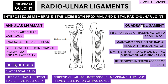Next, the quadrate ligament. Its attachment goes horizontal — from the inferior edge of the radial notch of your ulna to the neck of the radius. It has a few functions: first, it maintains the position of the radial head within the radial notch. It also limits the spin of the radius during supination and pronation — the radial head spins inside the annular ligament over the capitulum, and this spin is limited by your quadrate ligament. It also reinforces the inferior aspect of your capsule.